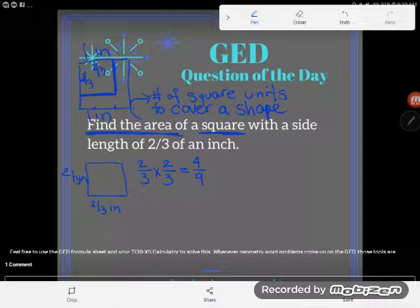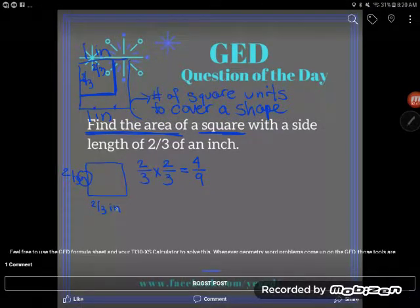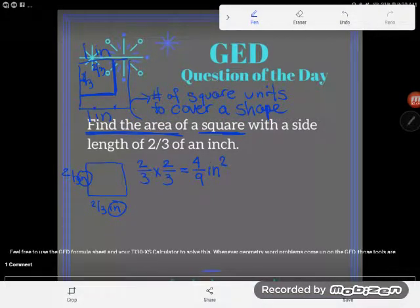Be really, really careful though. A geometry problem isn't done without a unit. So four-ninths what? Well, notice you were multiplying inches by inches, and so what you're going to end up with is four-ninths of a square inch. Just like two times two is the same as two squared, inches times inches is the same as square inches.